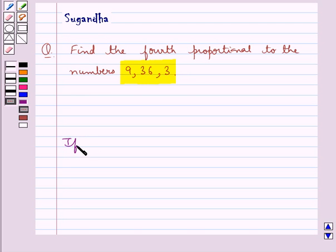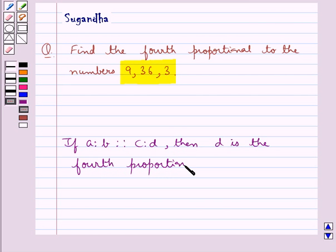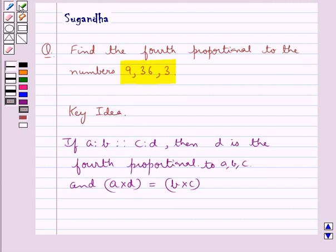We know that if A is to B is proportional to C is to D, then D is the fourth proportional to A, B and C. Also the product of extremes, that is A multiplied by D, is equal to the product of means which is B multiplied by C. This is the key idea to be used in this question.